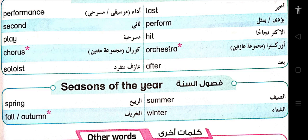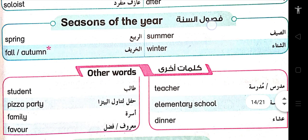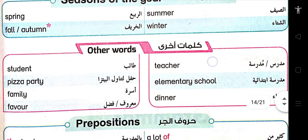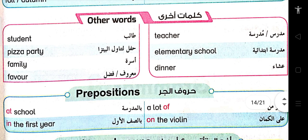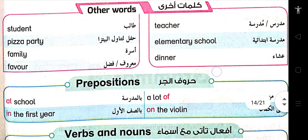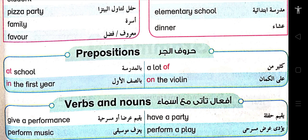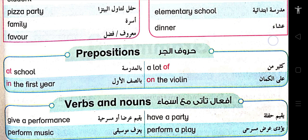Last, Perform, Hit, Orchestra. After, Spring, Fall or Autumn, Summer, Winter. Student, Pizza Party, Family, Favor, Teacher, Elementary School, Dinner. At school in the first year. A lot of. On the violin. Give a performance. Perform music. Have a party. Perform a play.